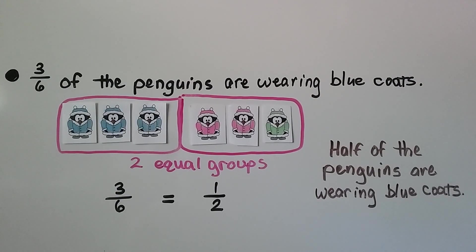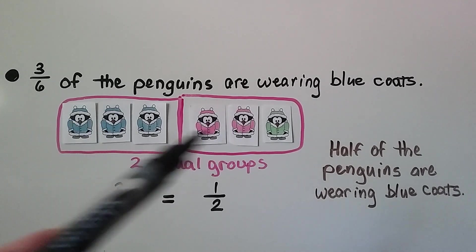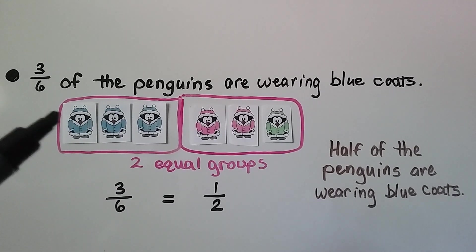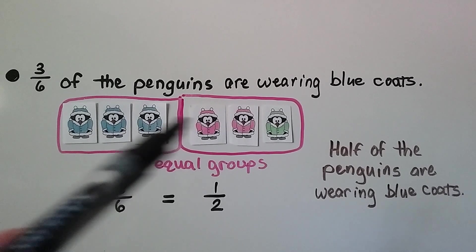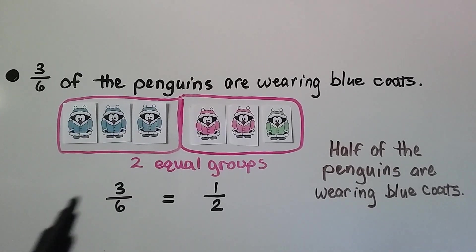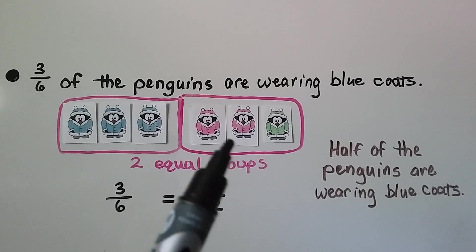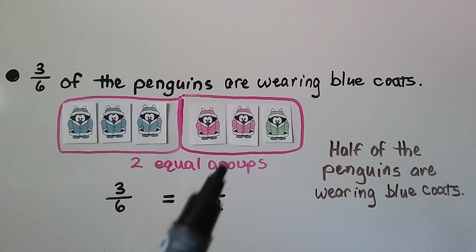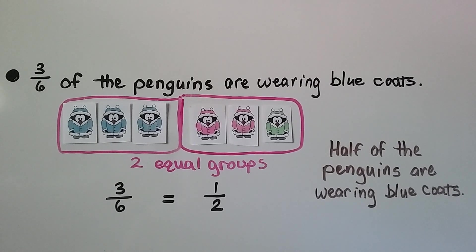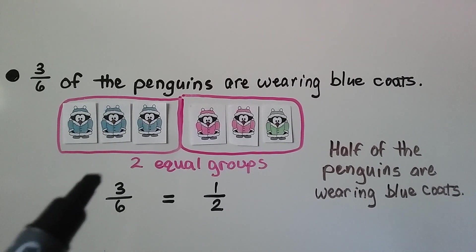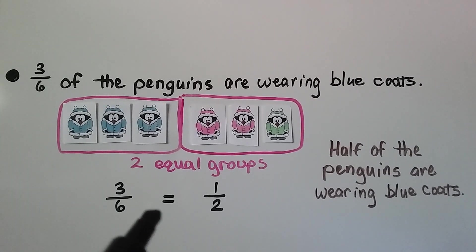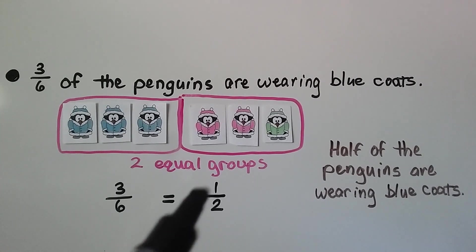Here we have six penguins wearing coats. Three of the six penguins are wearing blue coats — that's three out of six, three-sixths. We can split them into two equal groups: those wearing blue coats and those not wearing blue coats, and half the penguins are wearing blue coats. We can say three-sixths is equal to one of the two groups — one-half.